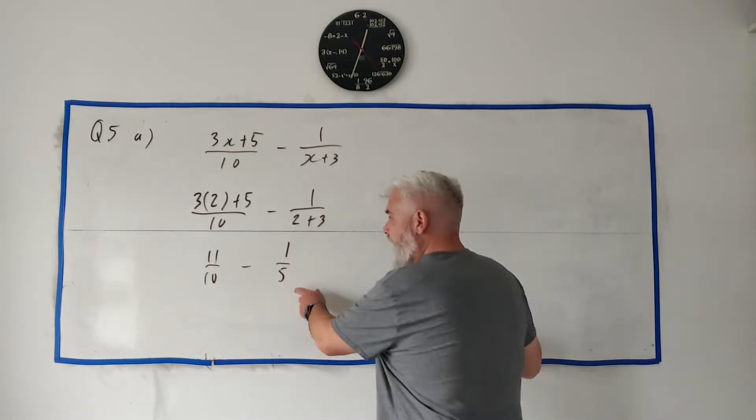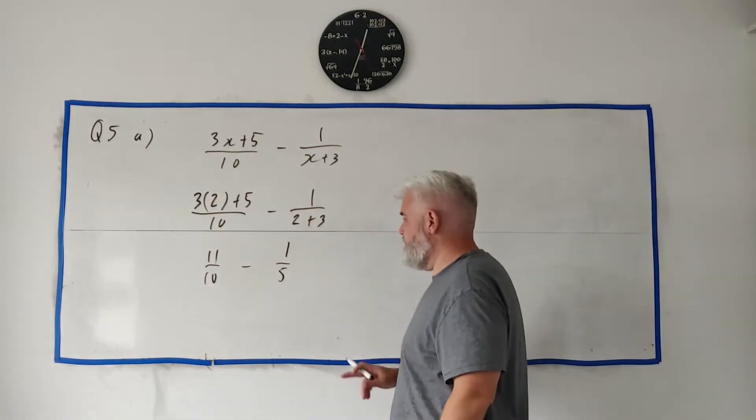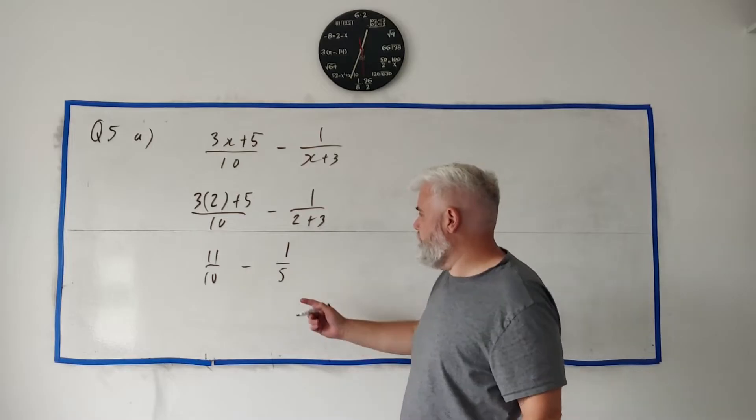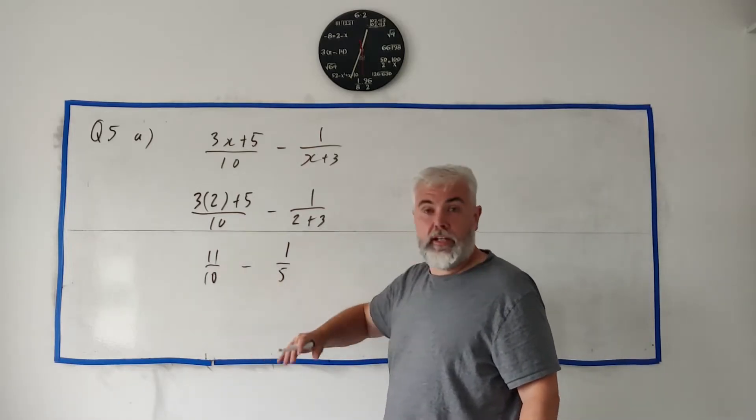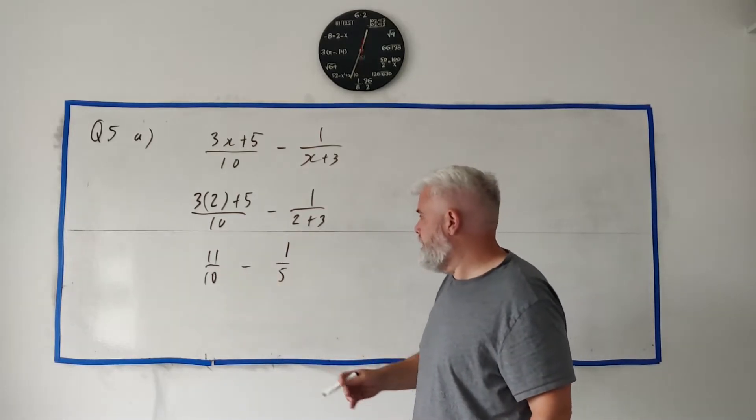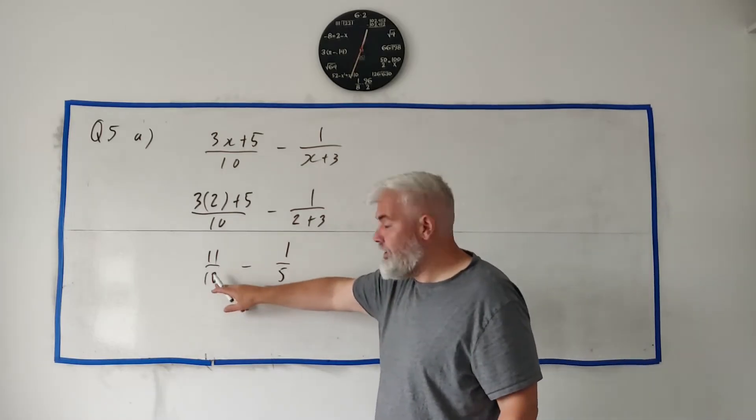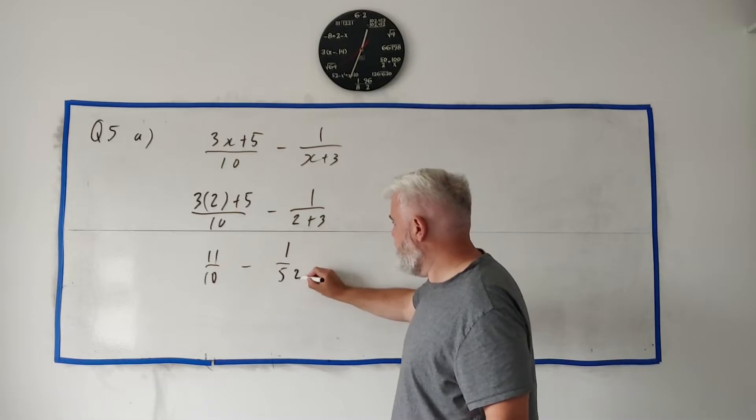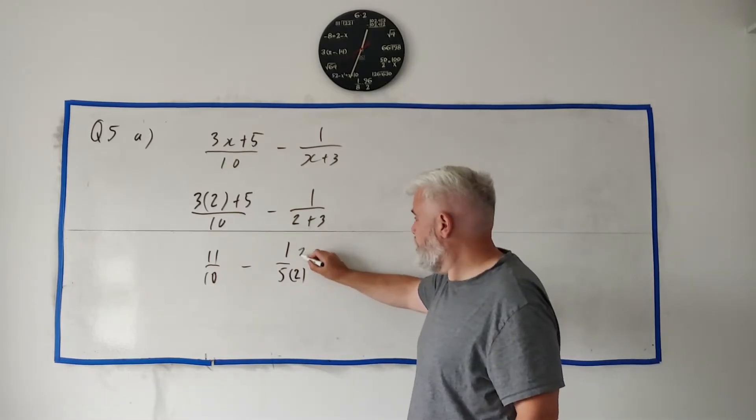How do we add or take away two fractions? You could cross multiply, but you don't have to do that. We can just find a common lowest common denominator, and 10 goes into 10, 5 goes into 10.